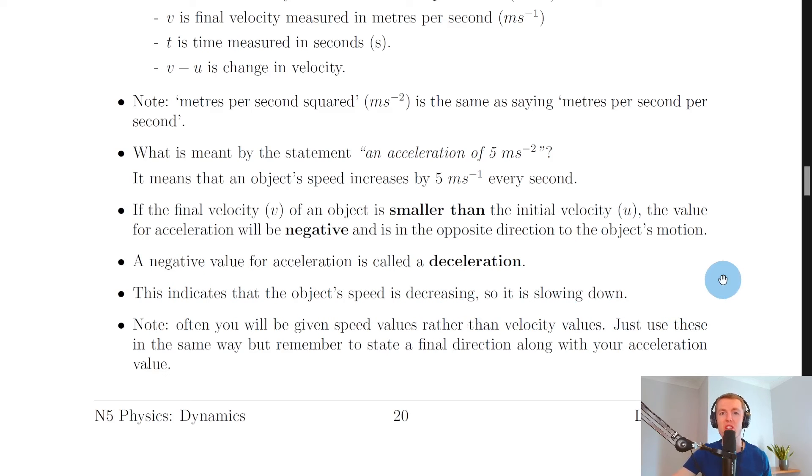So don't worry if you're doing a calculation and you get a negative value for acceleration, this just implies that the object is slowing down, i.e. it's a deceleration, whereas a positive value for acceleration means the object is speeding up.